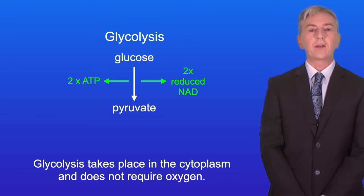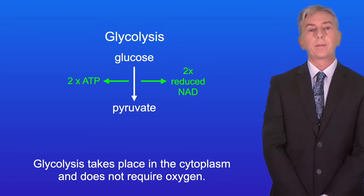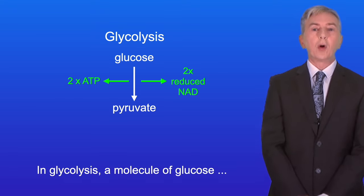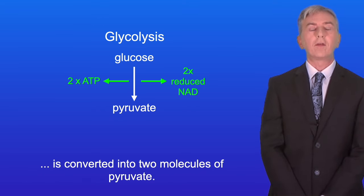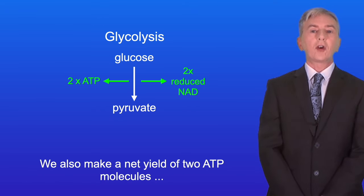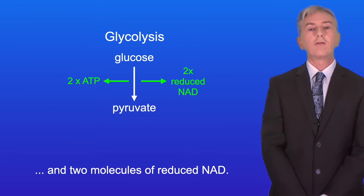Glycolysis takes place in the cytoplasm and does not require oxygen. In glycolysis a molecule of glucose is converted into two molecules of pyruvate. We also make a net yield of two ATP molecules and two molecules of reduced NAD.